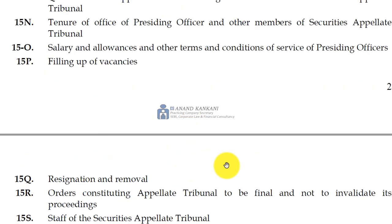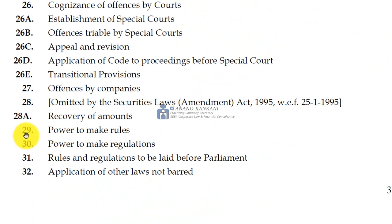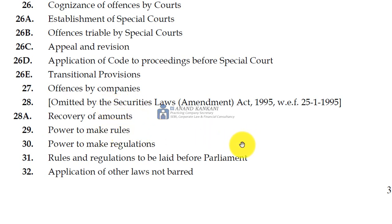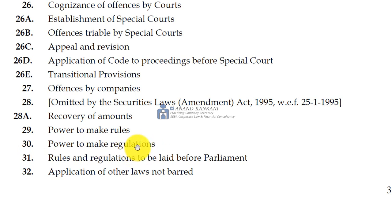Apart from that, there is Section 29 and Section 30. Section 29 is power to make rules and Section 30 is the power to make regulations. Whatever rules you see in the securities law — or in any law — the rules are made by the central government. For example, under the Companies Act, rules are made by the Ministry of Corporate Affairs. But when you talk about regulations, the regulations are made by the regulator.